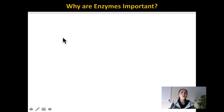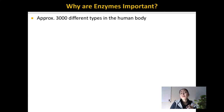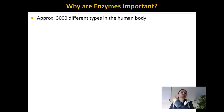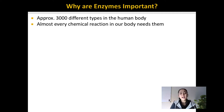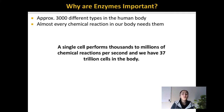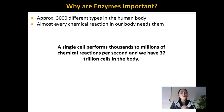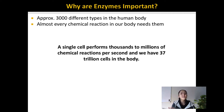Let's talk about why enzymes are important. There are approximately 3,000 different types of enzymes in the human body, and each one is specific for speeding up one type of chemical reaction. Enzymes are necessary for speeding up almost every chemical reaction in the human body. A single cell performs about a thousand to a million chemical reactions per second, and we have 37 trillion cells in the human body. In order to survive, we need enzymes — otherwise, these chemical reactions would not happen quickly enough.